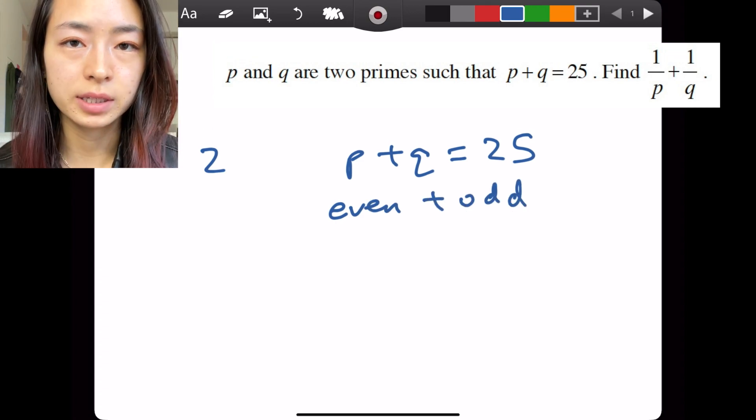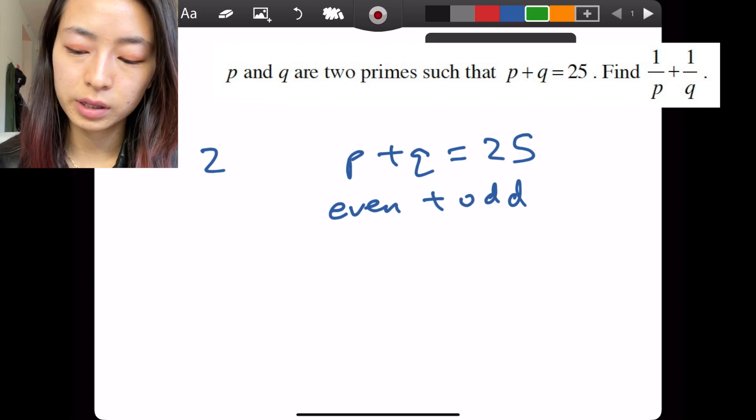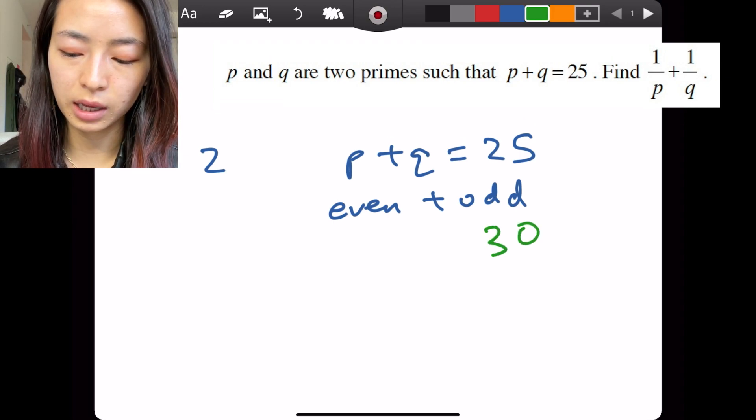P plus Q equals 25 means that it was the sum of an even number plus an odd number. So this is that math sense we need, right?